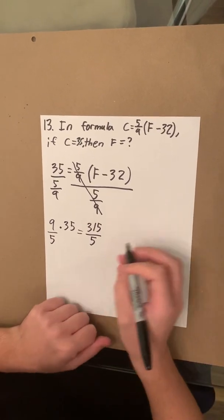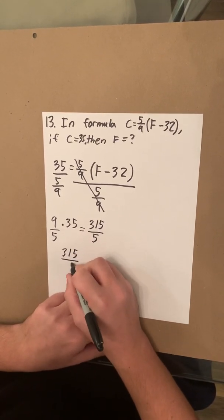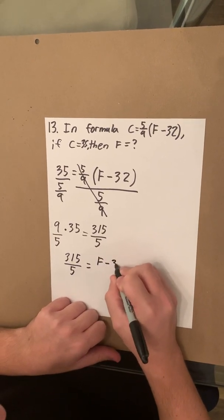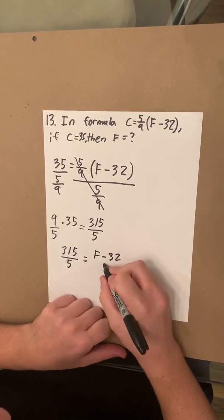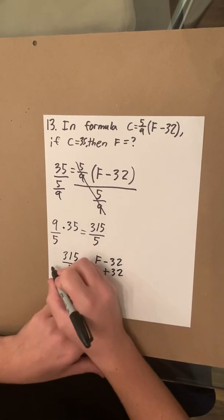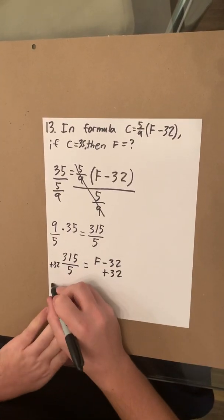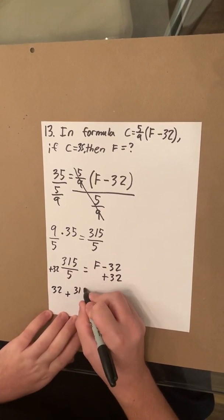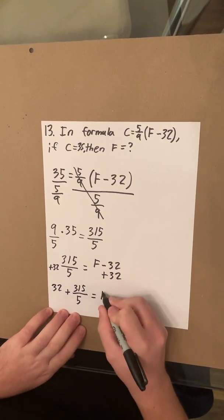So we can rewrite our problem again to 315 over 5 equals F minus 32. Now we still have this 32 to deal with because we need to isolate the F. So add 32 to this side, add 32 to this side, and we get 32 plus 315 over 5 equals F.